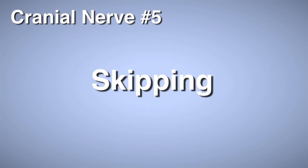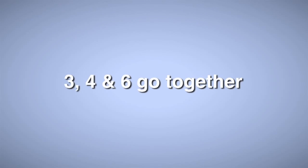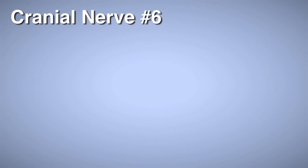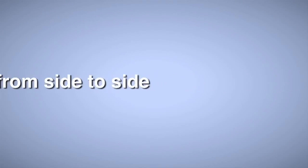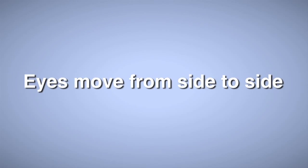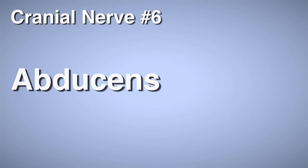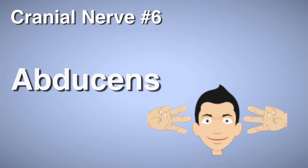Do the number 4 and make that jellyfish go down inward between your eyes. Now I'm skipping number 5 to jump right to number 6, because 3, 4, and 6 go together. Number 6 is abducens, where your eyes are moving outside, side to side. Make three fingers on both your left and right side of your eyes and look back and forth.